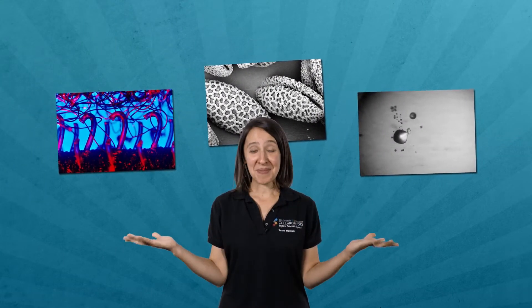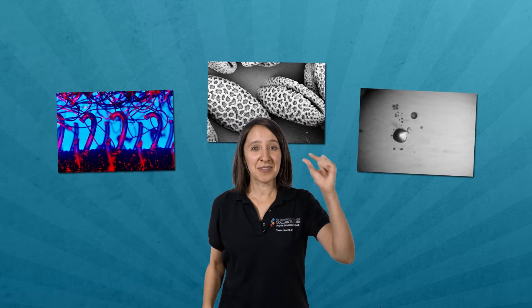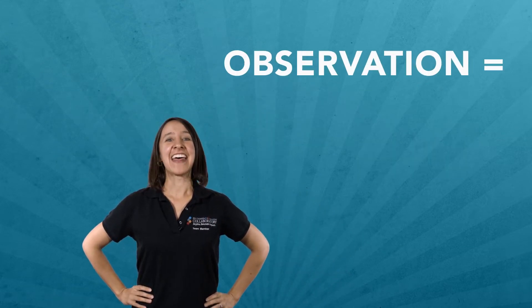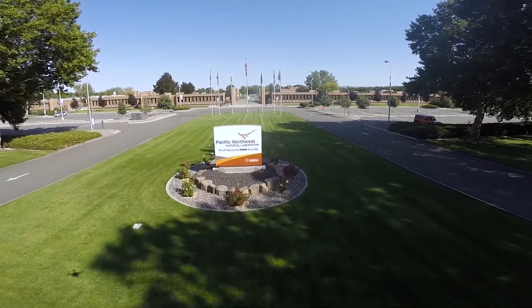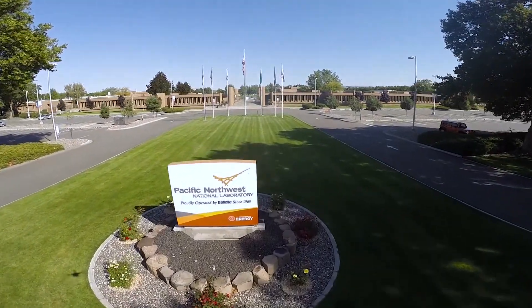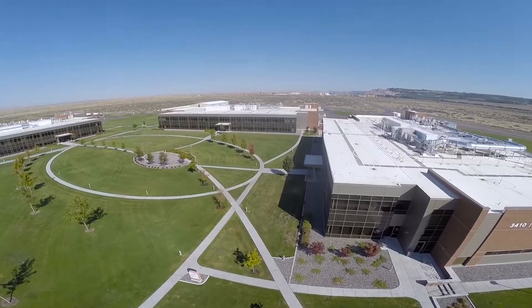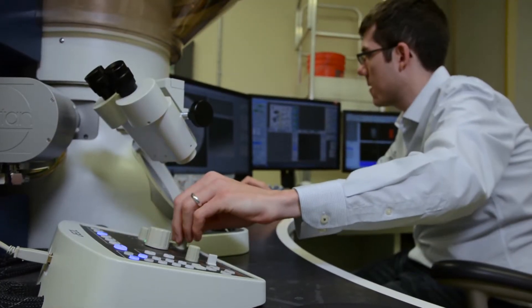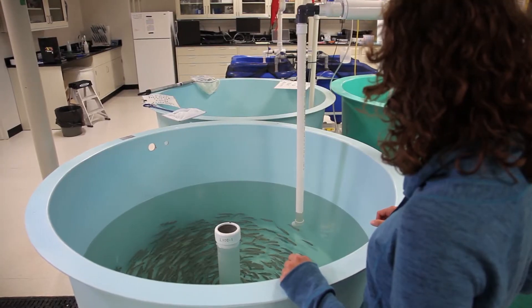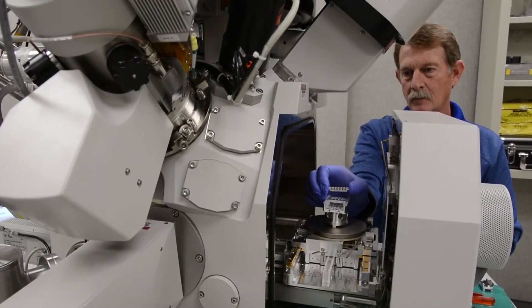So you see, microscopes help us observe the really, really small. And when you make an observation, that's when science and engineering begins. Speaking of which, I wonder what scientists and engineers are looking at with microscopes today? To find out, let's go to Pacific Northwest National Laboratory, a Department of Energy National Lab in Richland, Washington. There, researchers tackle the world's greatest challenges. And I bet you they have a microscope or two.